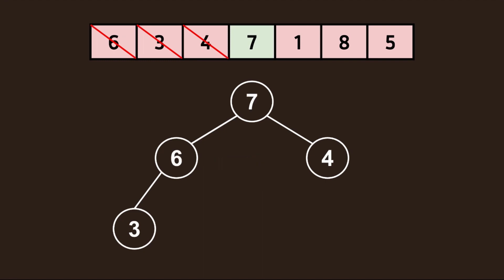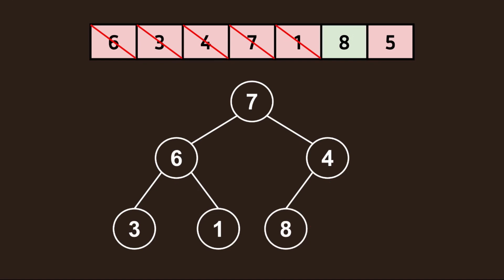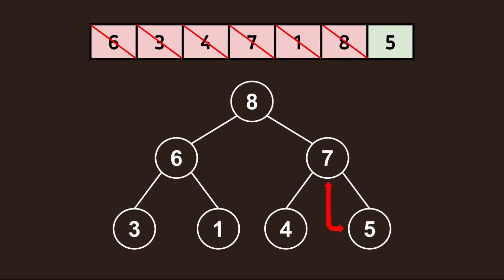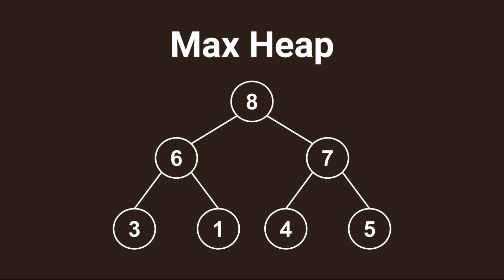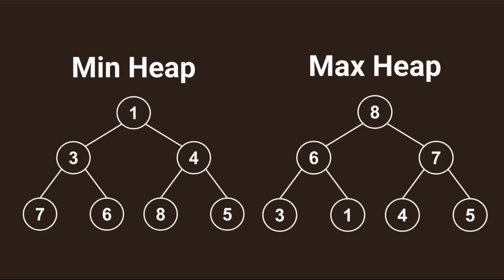I think we've got the hang of it, so I'll go through the rest of the iterations. Here's our max heap. Note that the value at the root is the maximum, while in the min heap, the root is the minimum. Here's a side by side look at our min and max heap that we created.